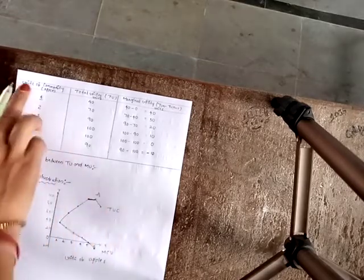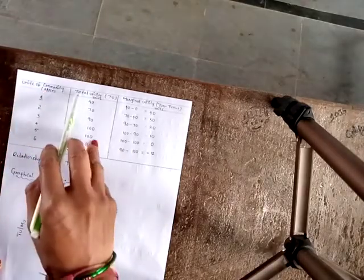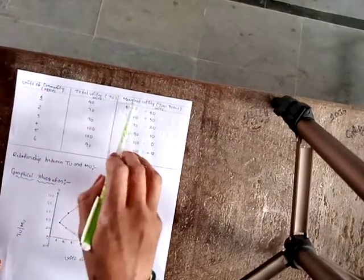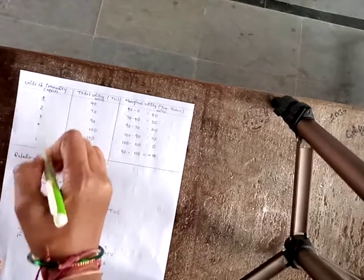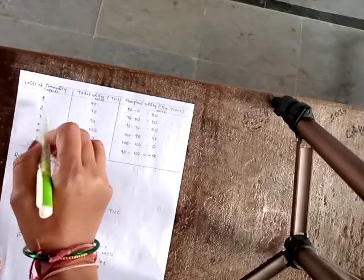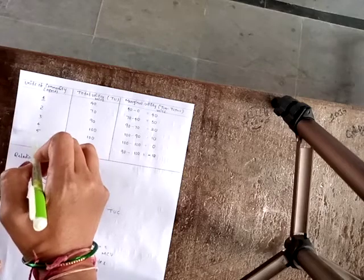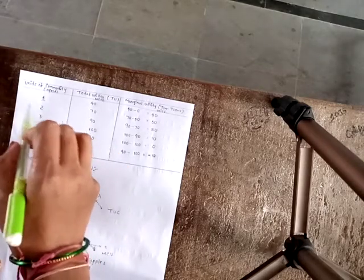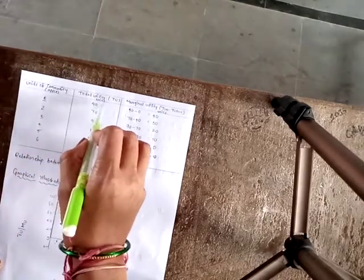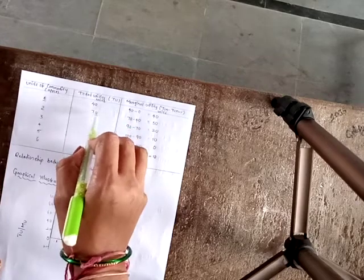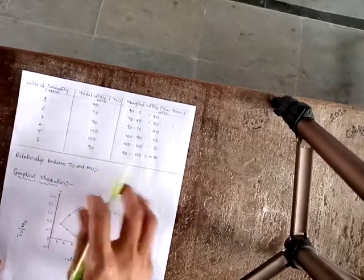The table has three columns: units of commodity, total utility, and marginal utility. For 1 to 6 units of apples, the total utility values are: 40, 70, 90, 100, 100, and 90.